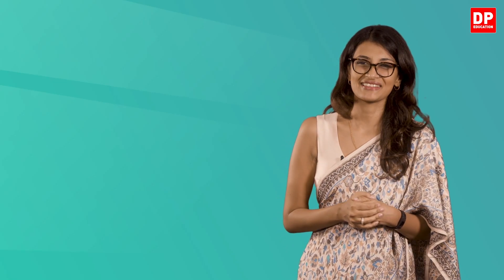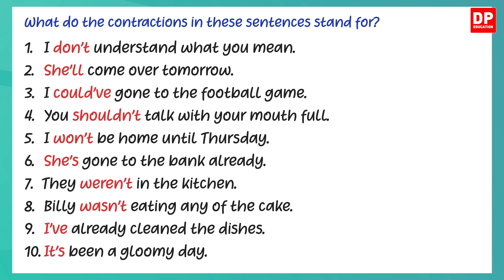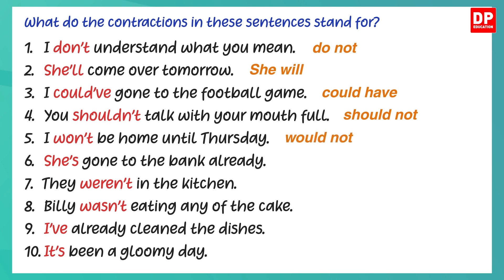Let's now look at an exercise to familiarise ourselves with contractions. 'I don't understand what you mean' — do not. 'She'll come over tomorrow' — she will. 'I could have gone to the football game' — could have. 'You shouldn't talk with your mouth full' — should not. 'I won't be home until Thursday' — would not. 'She's gone to the bank already' — she has. 'They weren't in the kitchen' — were not. 'Billy wasn't eating any of the cake' — was not. 'I've already cleaned the dishes' — I have. 'It's been a gloomy day' — it has.